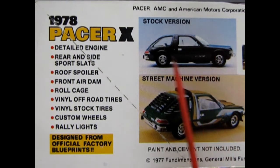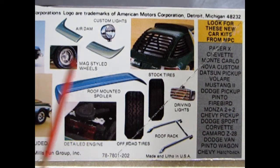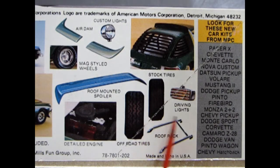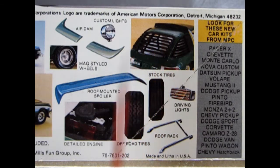Here we can see the stock version and down below is the street machine version. The model kit also includes air dams, custom lights, mag style wheels, roof mounted spoiler, detailed engine, off-road tires, roof rack, stock tires, driving lights, and these nice window slats.